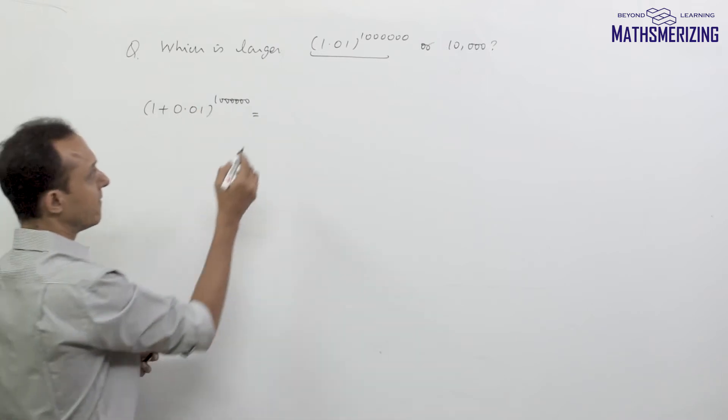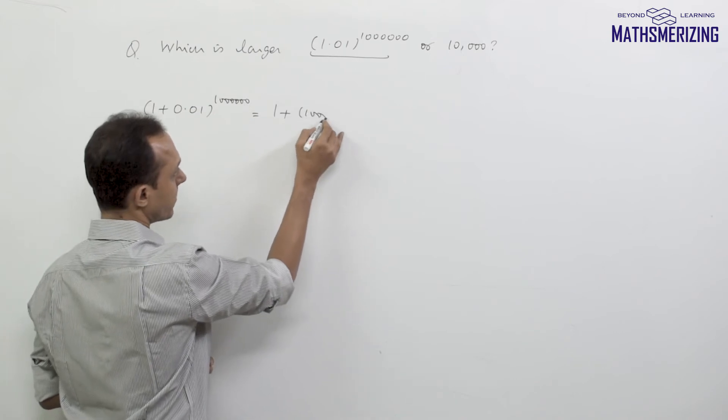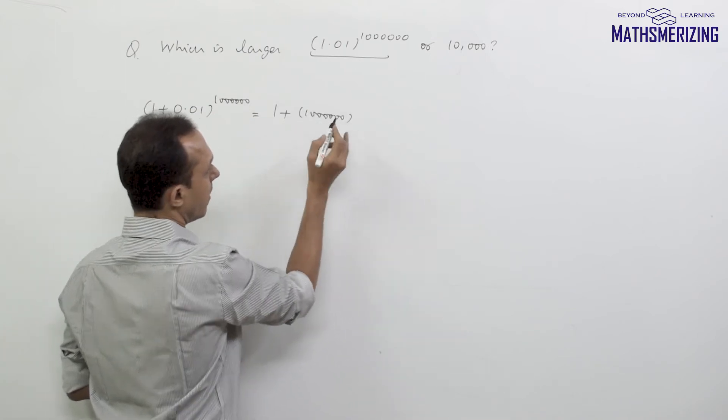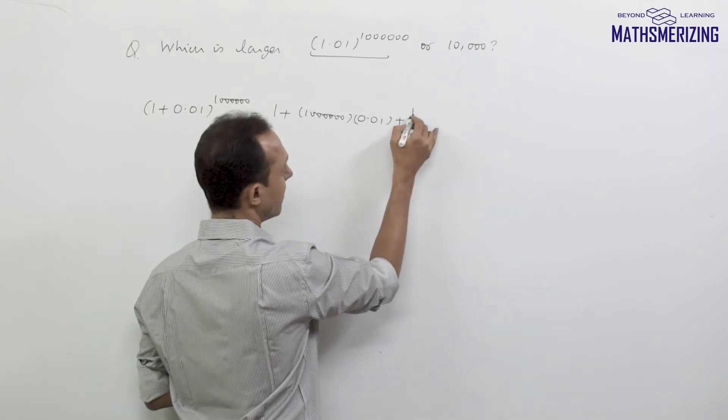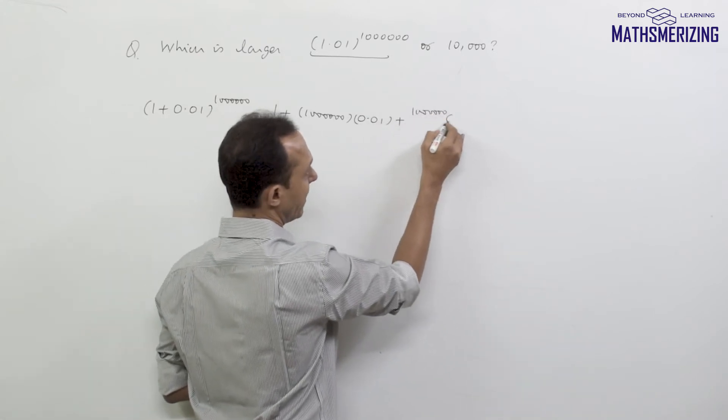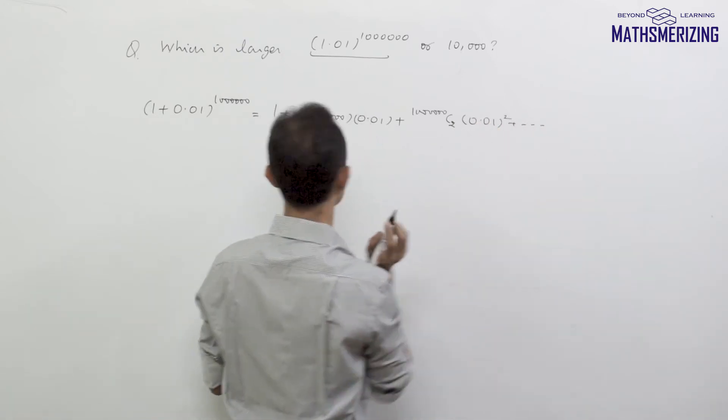It's 1 plus x to the power n. I'll write the first few terms. It will be 1 plus n, where n is 1 million, into 0.01, and then 1 million C2 times 0.01 squared, and I'll continue.